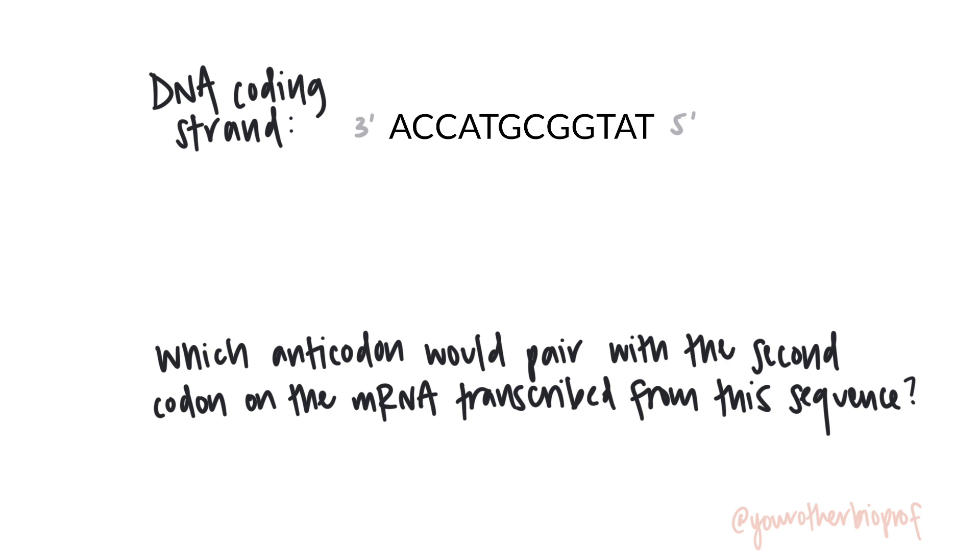Ready? All right. I gave you the DNA coding strand, which I feel was very generous because you know that means all you need to do is swap the Ts for Us and you've got your mRNA. Just like the ribosome, you're going to start at the five prime end. Start scanning, looking for that first AUG right here. That's our start. Of course, that's going to give us methionine or F-Met if you're working with a bacterial gene. We don't care about that right now. We're looking for the second codon, which is GCG. So there's that second codon.